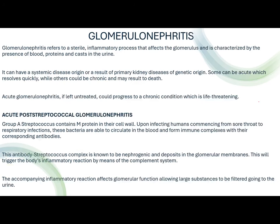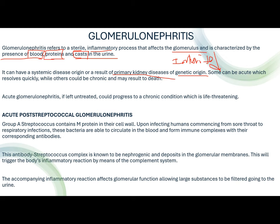Glomerulonephritis refers to a sterile inflammatory process that affects the glomeruli, characterized by the presence of blood, protein, and casts in the urine. It can have a systemic disease origin or result from primary kidney disease that is usually genetic in origin. Some cases could be acute, while others could be chronic and may result in death. Acute glomerulonephritis, if left untreated, could progress to a chronic condition, which is life-threatening.